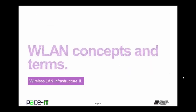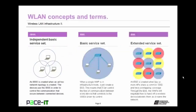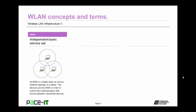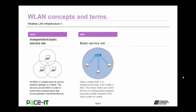Now let's move on to wireless LAN concepts and terms. First up is the IBSS, or Independent Basic Service Set. An IBSS is created when an ad hoc network topology is created. The devices use the IBSS to control the communication that occurs between the connected devices. Then there's the BSS, or Basic Service Set. When a single wireless access point is in infrastructure mode, it will create a BSS, which controls the flow of communication between every device that connects to the SSIDs under its control.